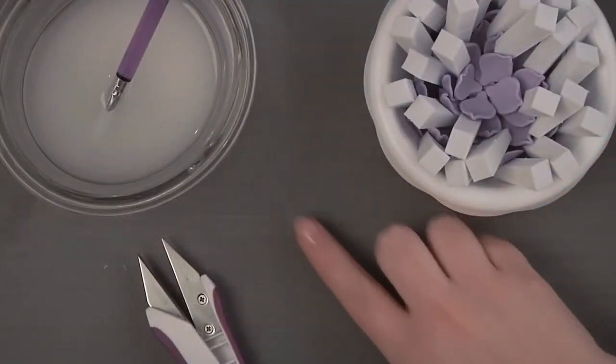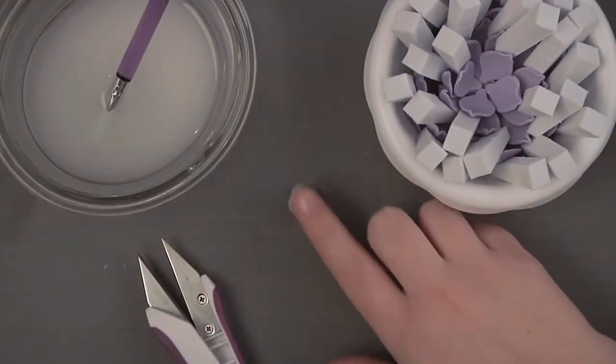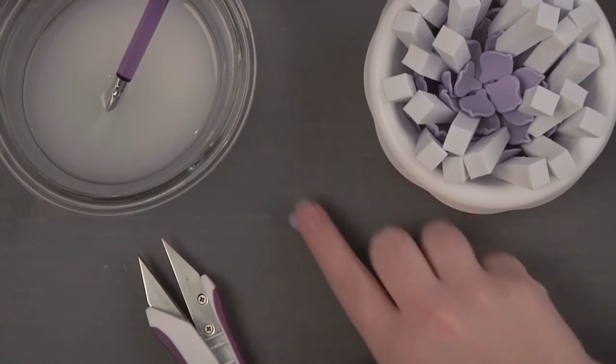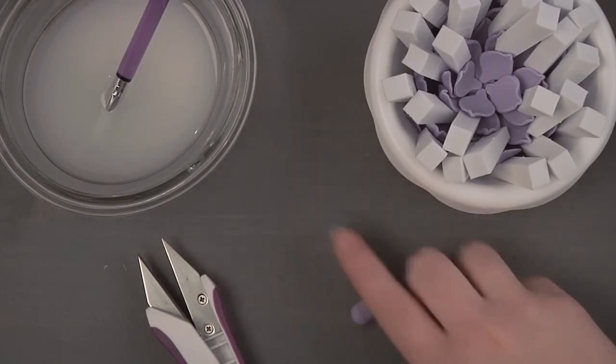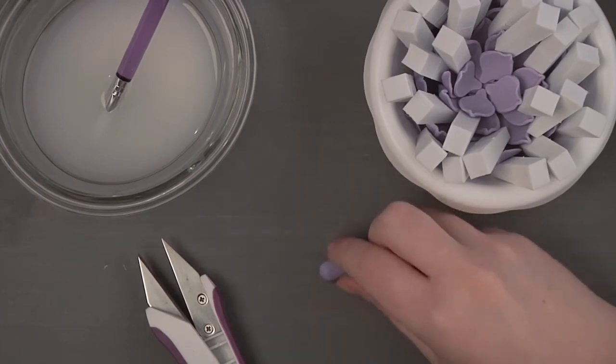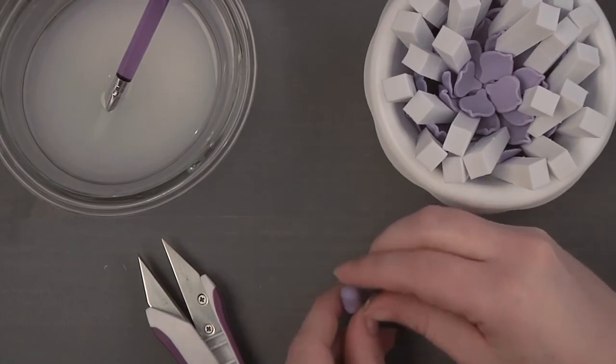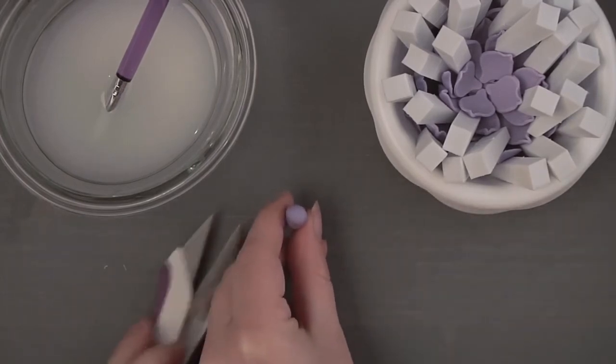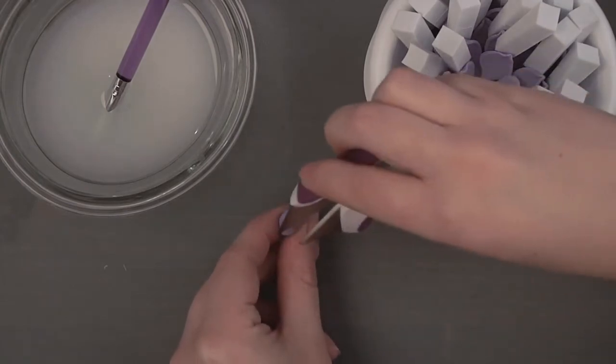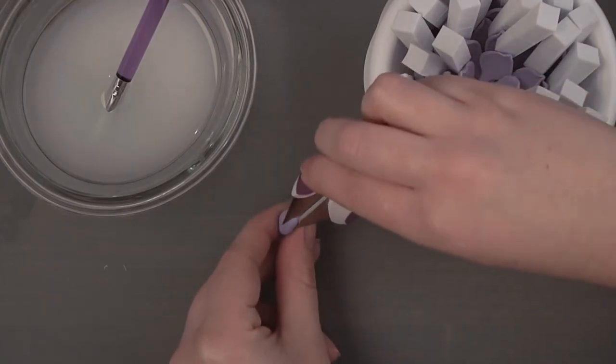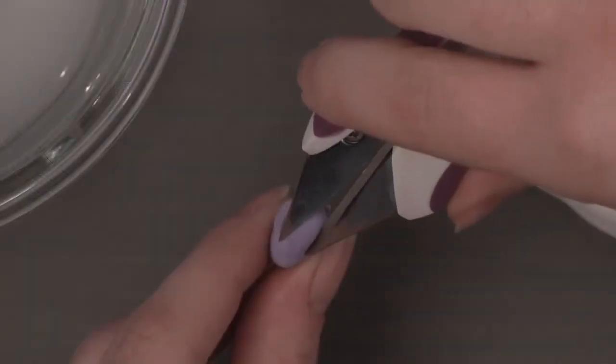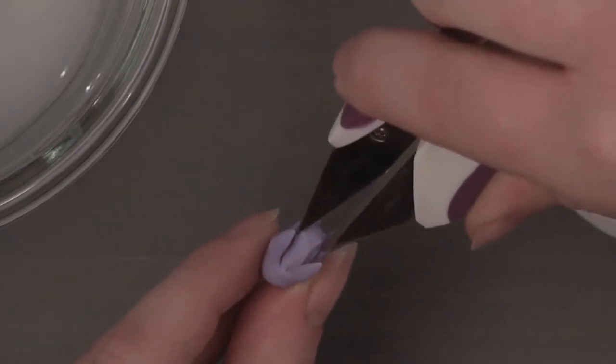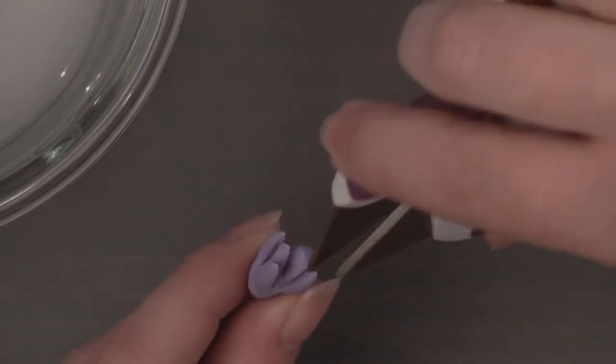To make the center of the succulent, roll a half inch ball of green gum paste into a log, measuring 3/4 of an inch long by 3/8 of an inch in diameter. With scissors, snip 4 slits 3/8 of an inch deep to create outside leaves and 2 or 3 slits for the inside leaves.